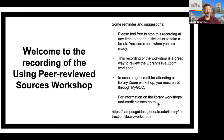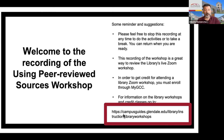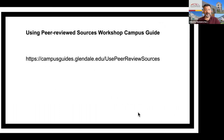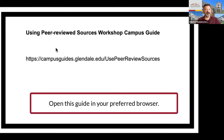For information on the library workshops and credit classes, go to https://campusguides.glendale.edu/library/instruction/library-workshops. The Using Peer-Reviewed Sources workshop campus guide can be located at https://campusguides.glendale.edu/using-peer-reviewed-sources.